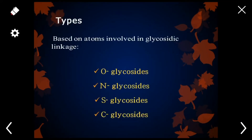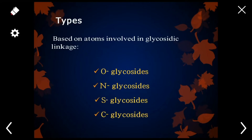First of all, we will discuss the types of glycosides on the basis of atoms involved in the glycosidic linkage. Here we have four basic types: O-glycoside, nitrogen glycoside, S-glycoside, and C-glycoside. We will see the detail one by one.